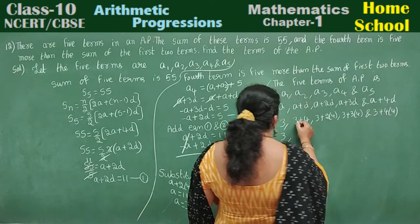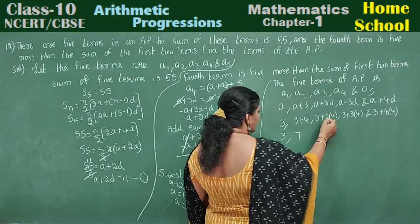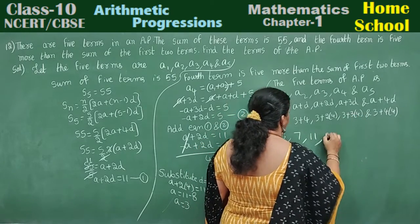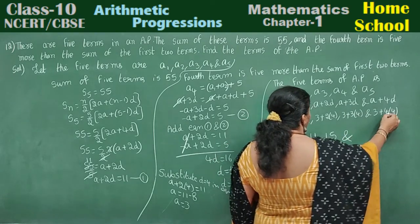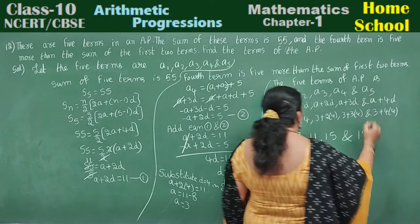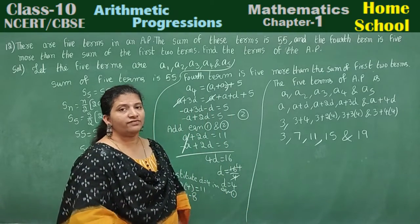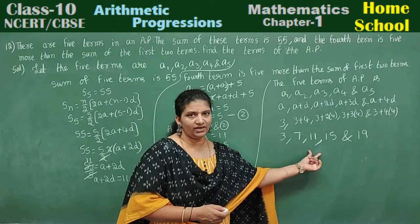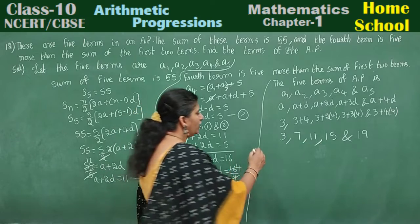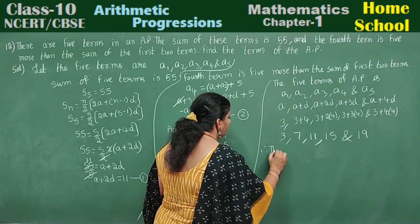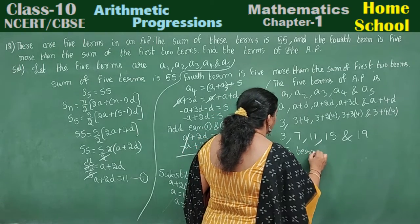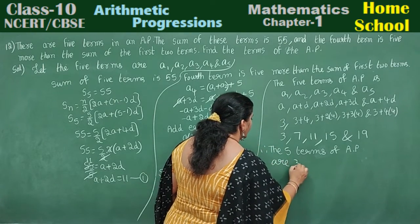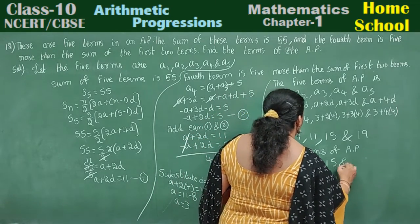Computing the values: 3 is the first term. 4 plus 3 equals 7. 2 fours are 8, and 8 plus 3 equals 11. 3 fours are 12, and 12 plus 3 equals 15. 4 fours are 16, and 16 plus 3 equals 19. Therefore the five terms of the arithmetic progression are 3, 7, 11, 15, and 19.